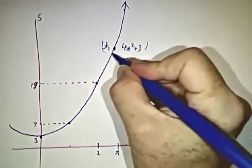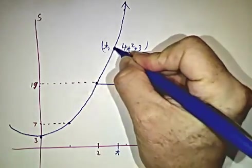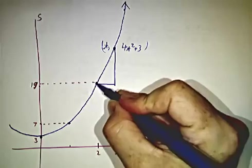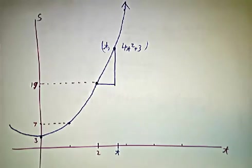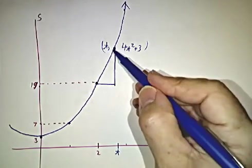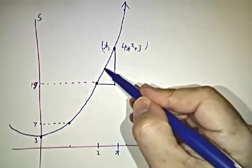And so what we need to do is we need to figure out the average velocity between time 2 and time t. And then we're going to take a limit as t gets closer and closer to 2.